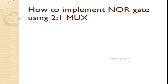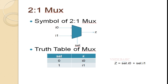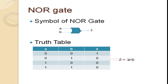Welcome to VHDL basics. Today we are going to implement a NOR gate using a 2-to-1 MUX. This is the simple diagram of the 2-to-1 MUX where I0, I1, and select are the inputs and Z is the output. Referring to the truth table: whenever select is 0, I0 will be assigned to Z; whenever select is 1, I1 will be assigned to Z. The boolean expression of the 2-to-1 MUX is Z = select_bar · I0 + select · I1.